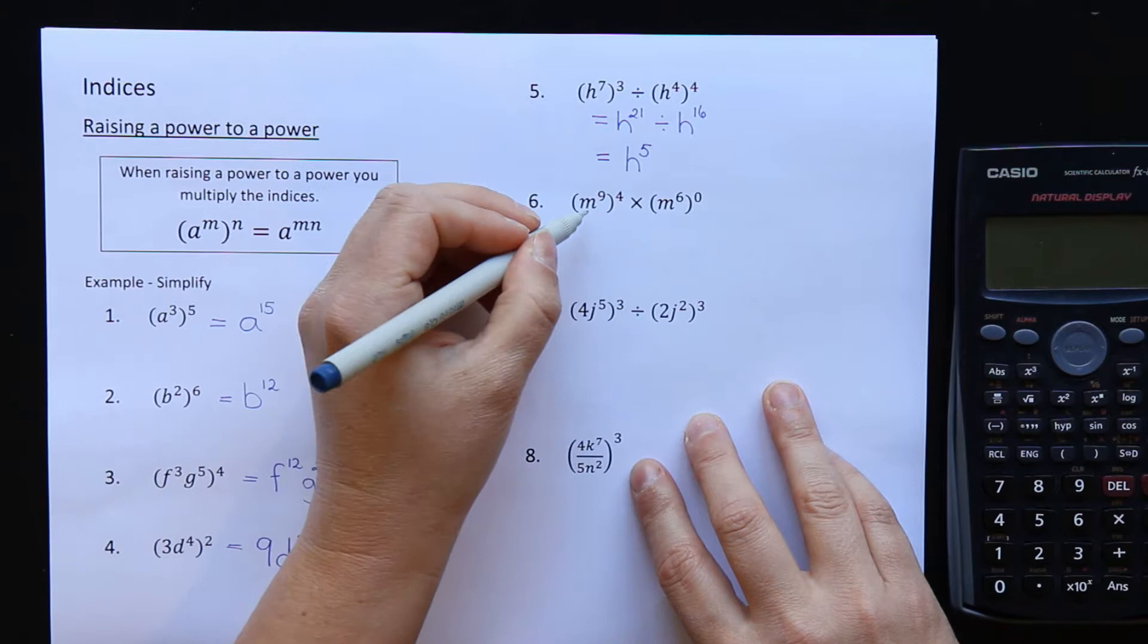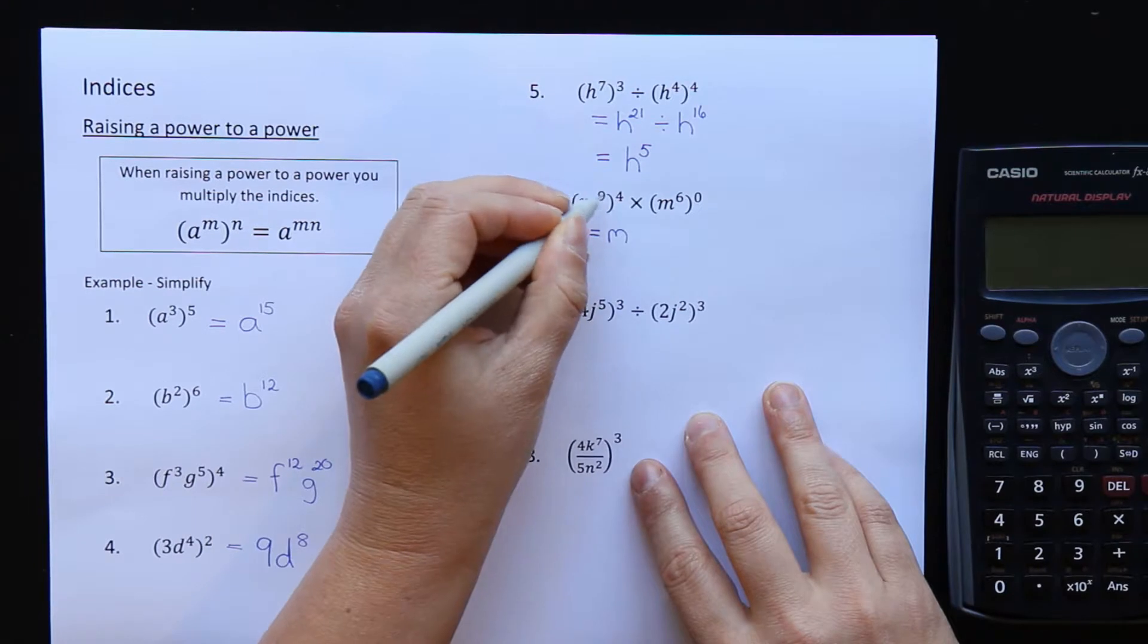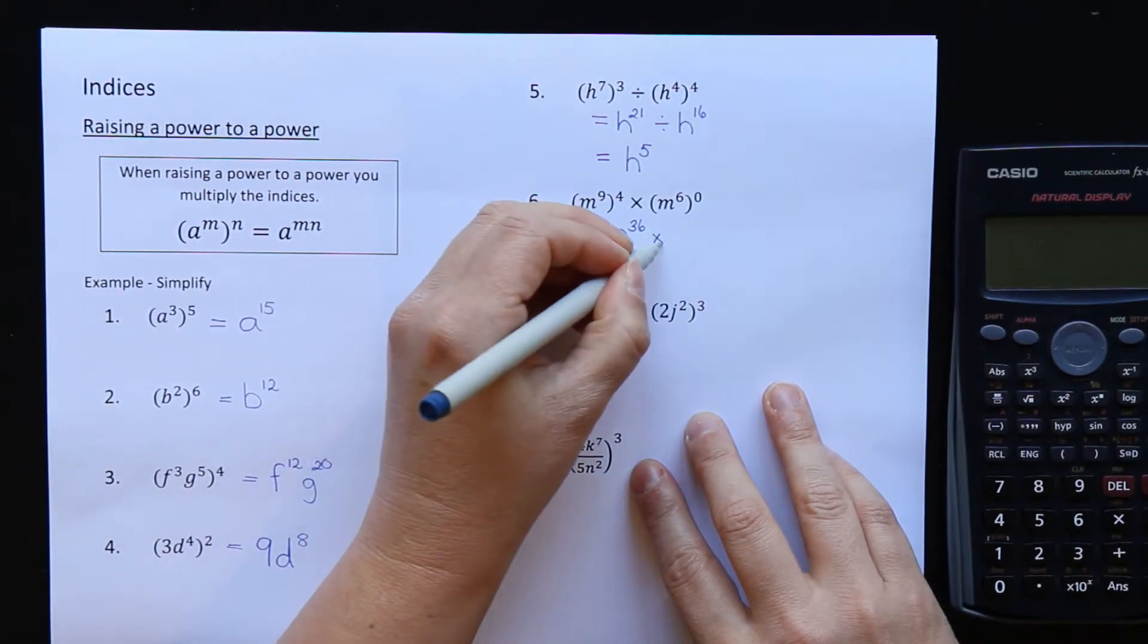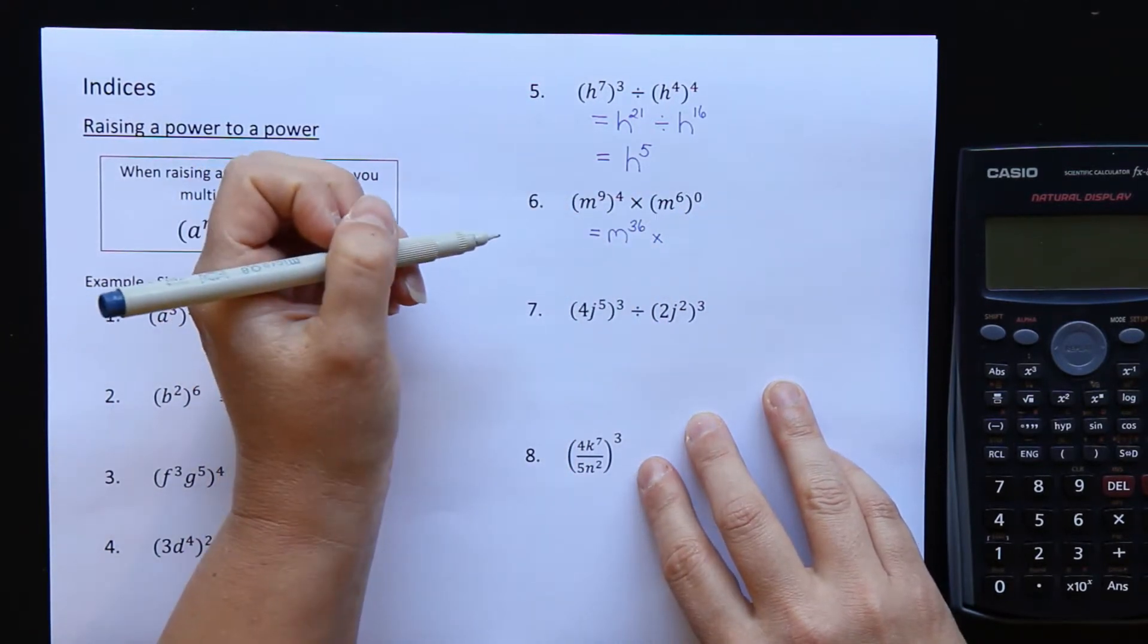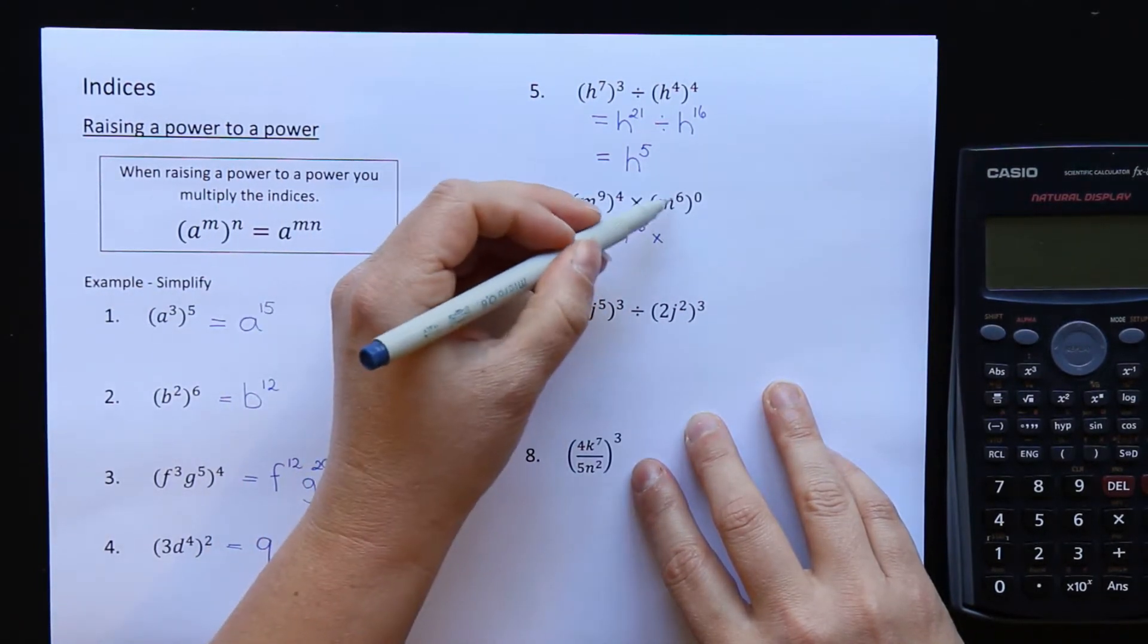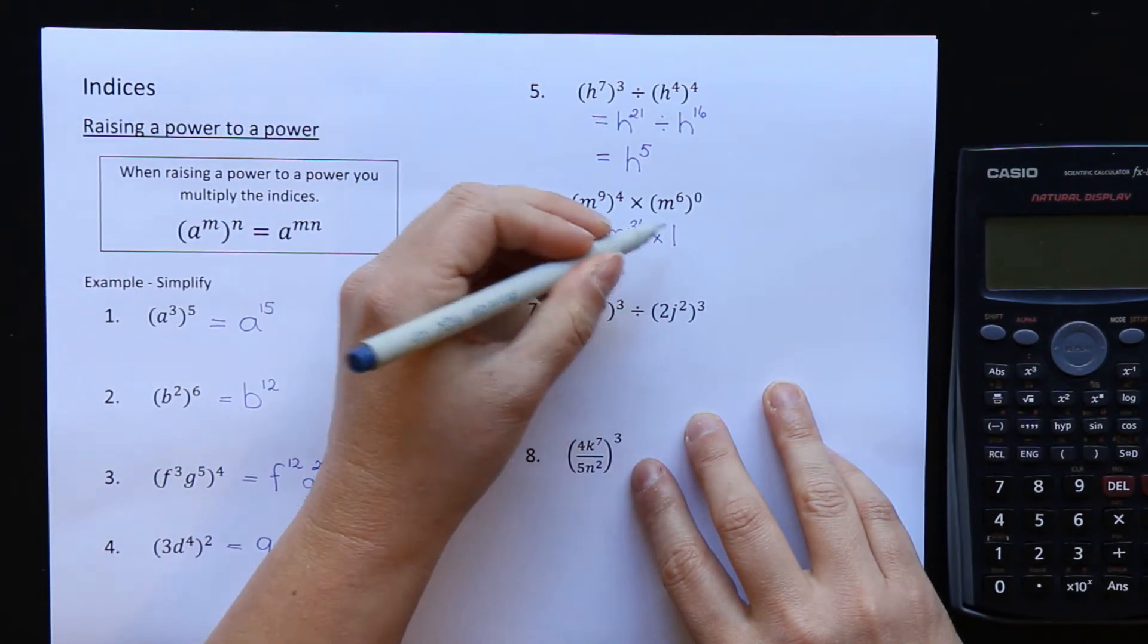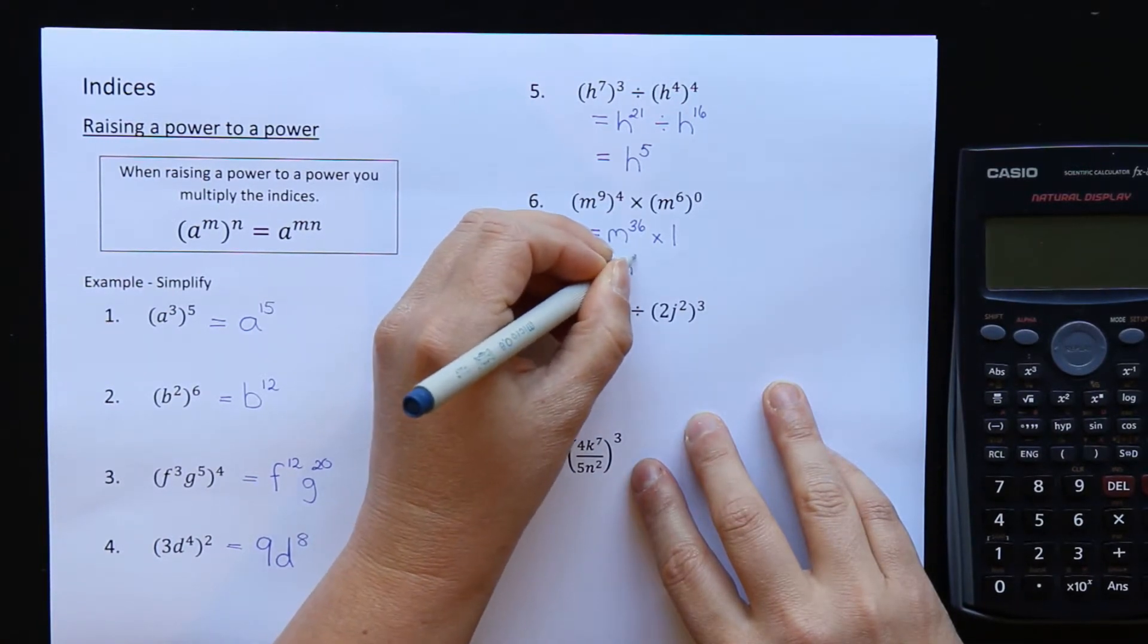All right, question 6. First of all, let's expand the brackets. m is the base. Multiply the powers. 9 times 4. m is the base. But I have a power of 0 here. Do you remember what something to the power of 0 is? That was the last lesson that we did. If anything is to the power of 0, this whole thing is just equal to 1. Okay? So I really don't have to multiply or do anything else here. My answer is just m to the power of 36.